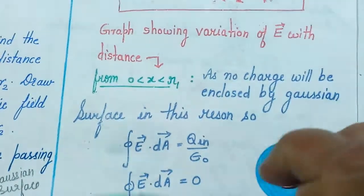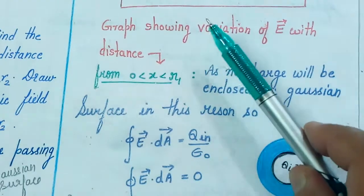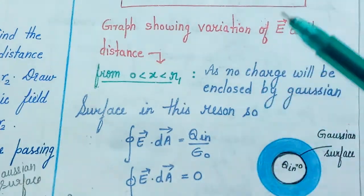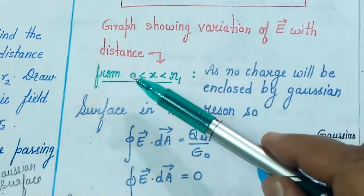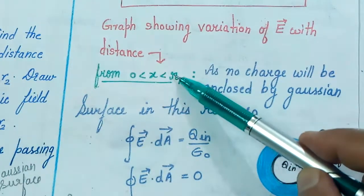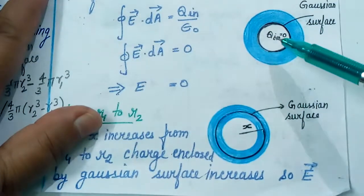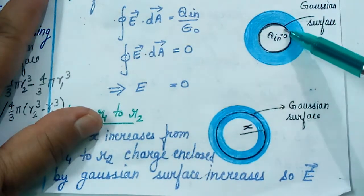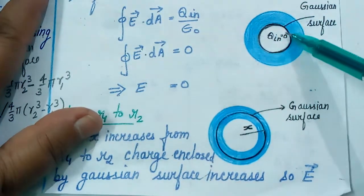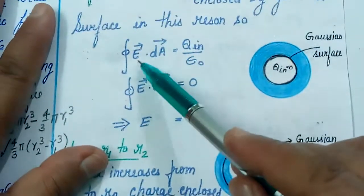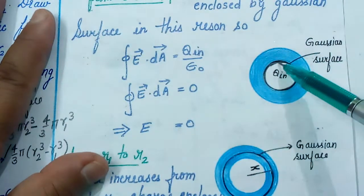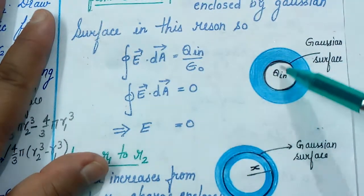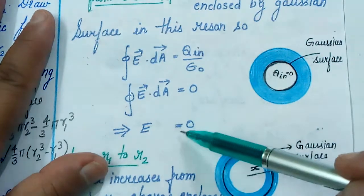Now let's come to the graph part. To discuss the graph, we divide the space into three regions. First region: from center to inner radius R1. In this region, there is no charge enclosed inside any Gaussian surface drawn here. Charge enclosed is zero, so by Gauss's Law, the electric field is zero throughout this entire inner region.